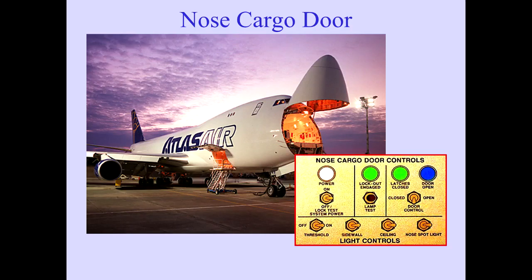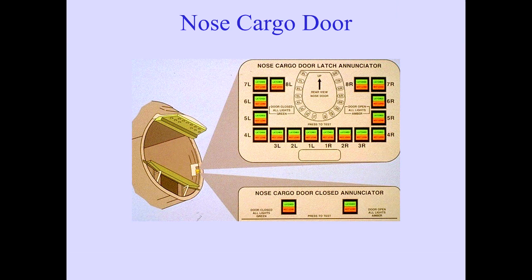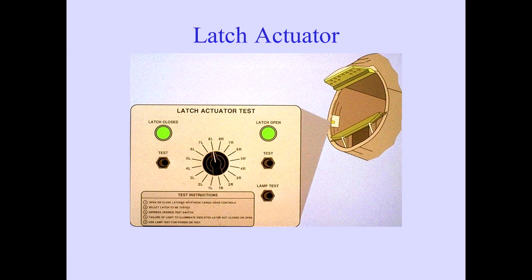The nose cargo door control panel is located on the forward left side of the main cargo deck. Light controls are also on this panel. Nose cargo door and latch enunciator panels are located directly below the nose cargo door control panel. A latch actuator test panel is located on the forward right side of the main cargo deck.